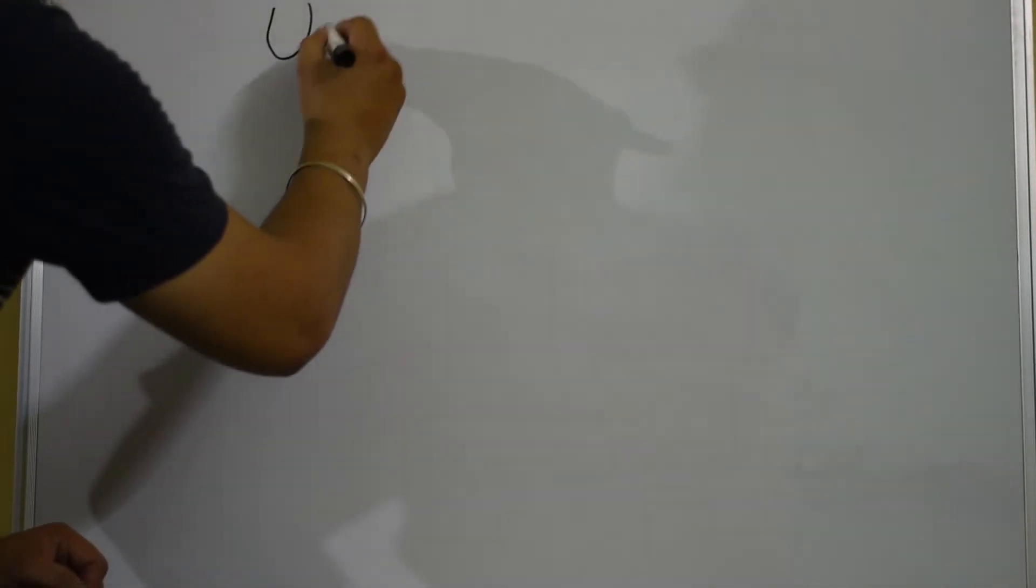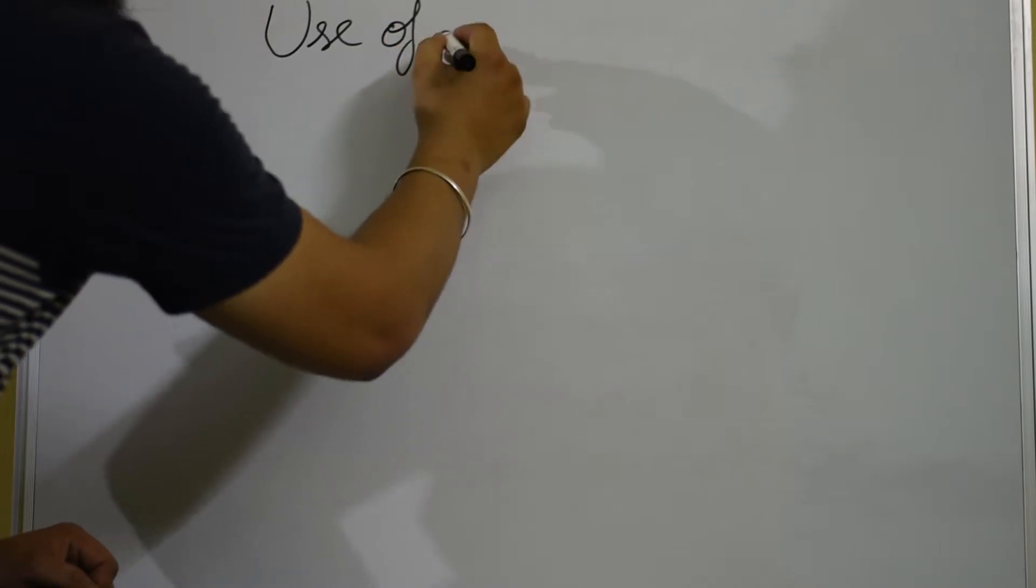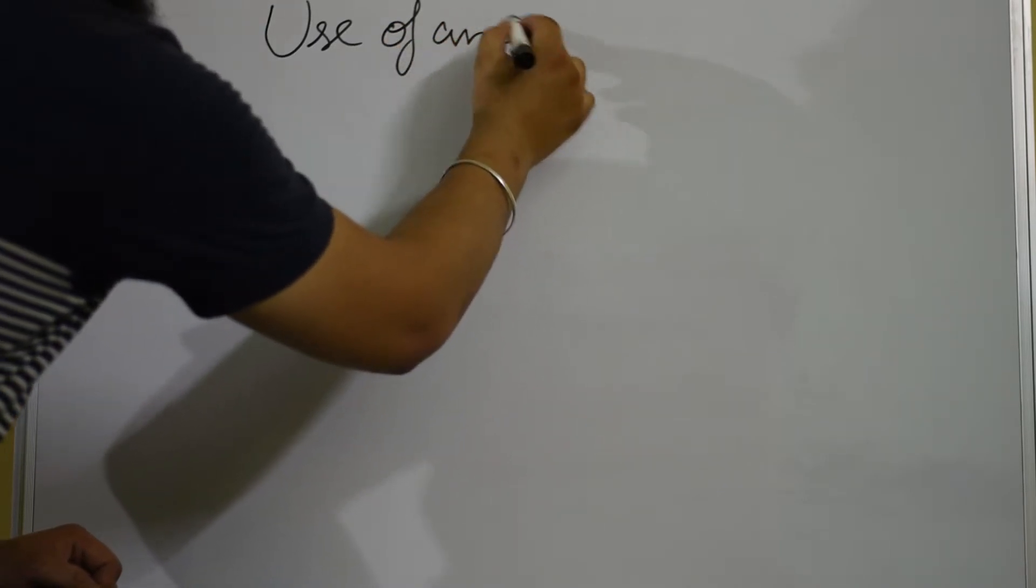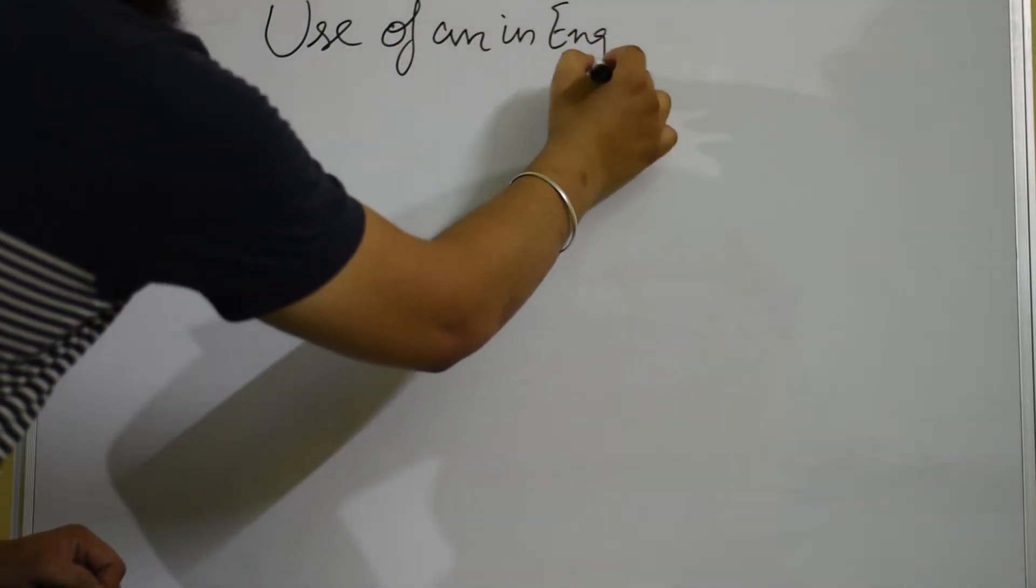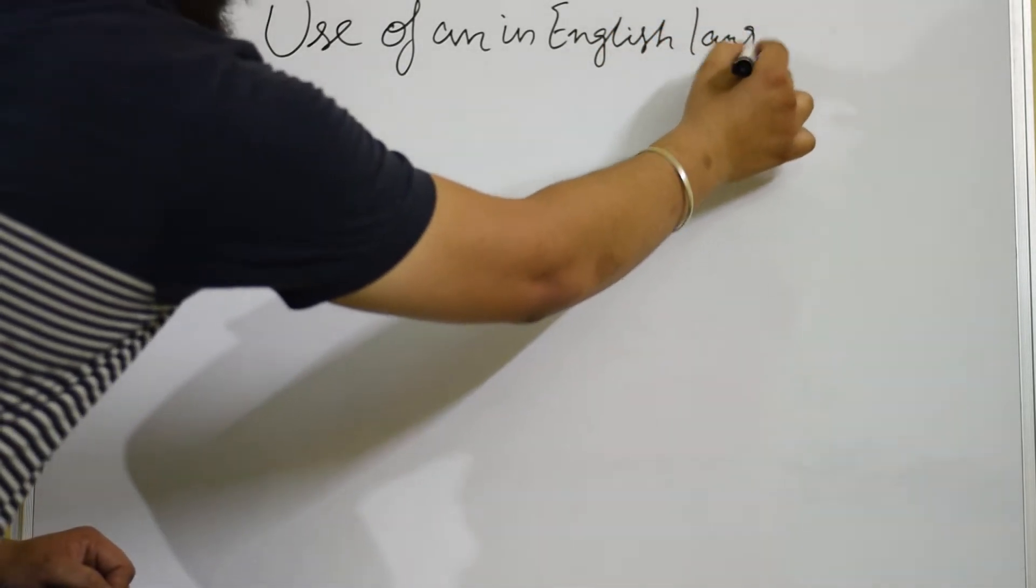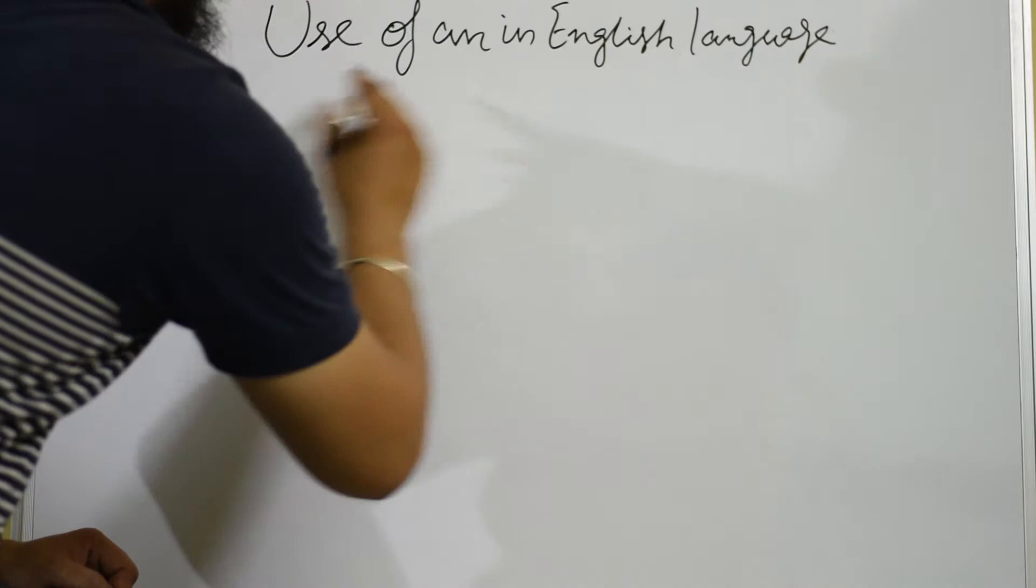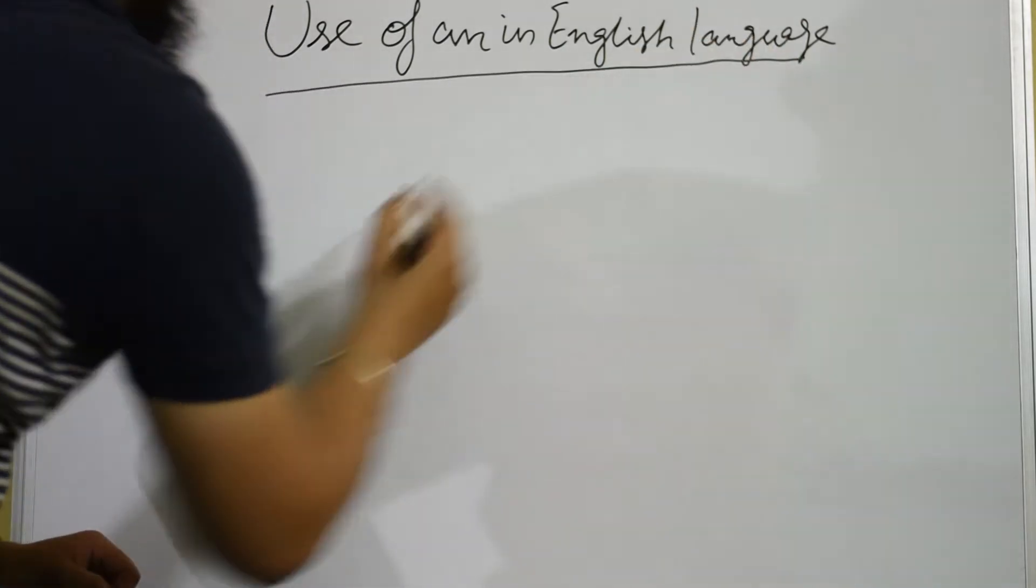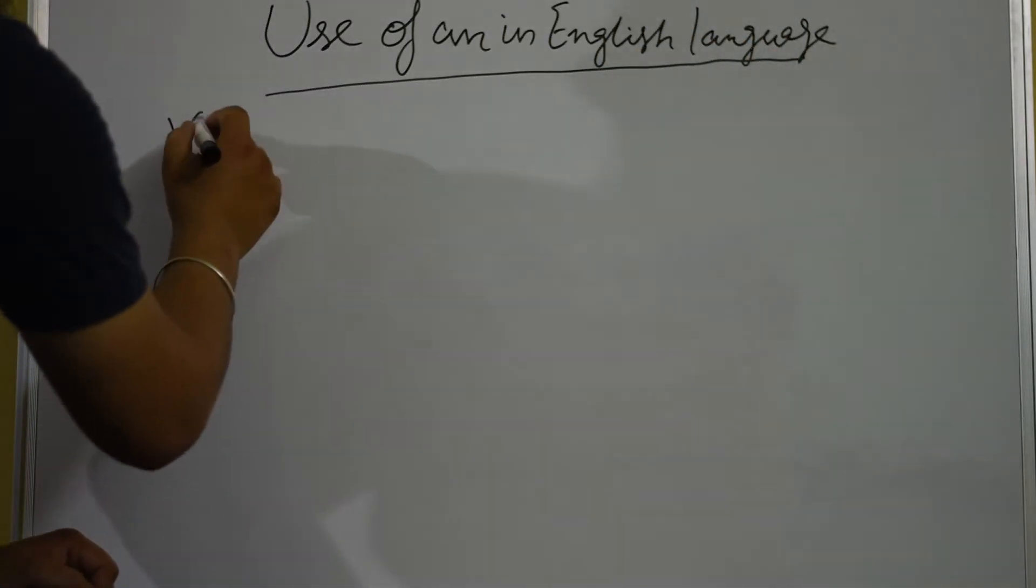Hey everyone, welcome to a very short video. We are going to discuss the use of 'an' in English language and the anomalies related to it. Now, as most of us know, 'an' is used with the vowels a, e, i, o, and u, and 'a' is used with the consonants.